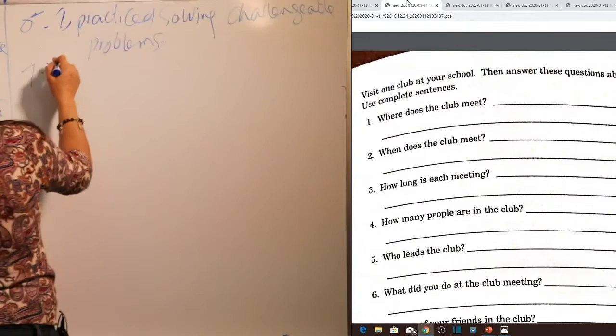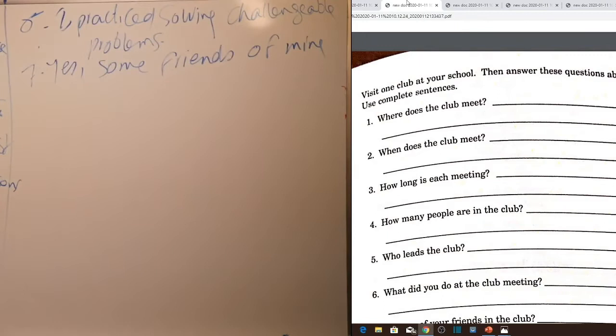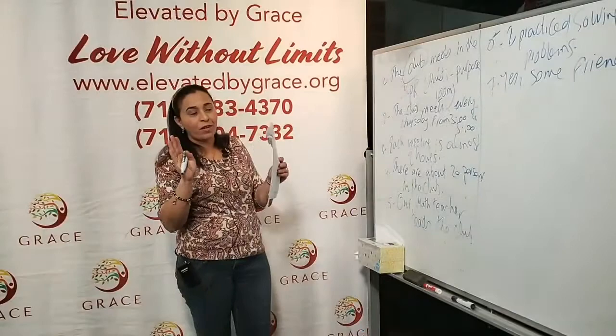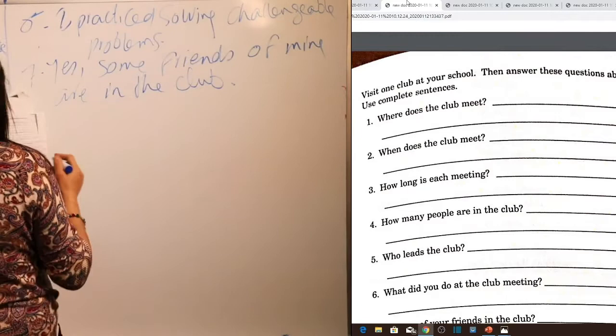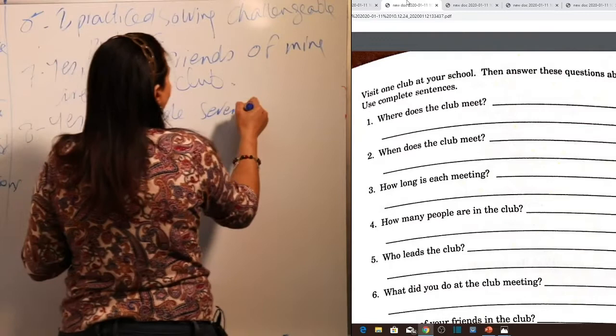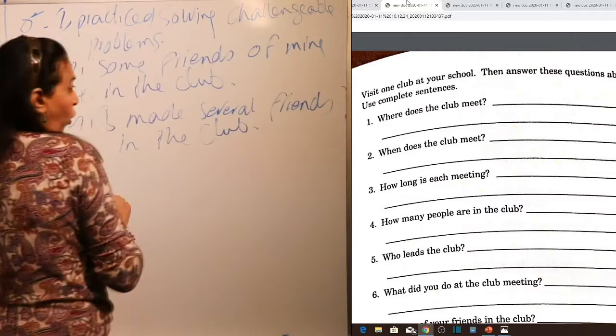Question seven: 'Are any of your friends in the club?' Yes — 'some friends of mine are in the club.' Note: we say 'a friend of mine,' not 'a friend of me.' 'Mine' refers to something belonging to me — 'a friend of mine' means one of my friends. Question eight: 'Did you make any new friends?' Yes — 'I made several friends in this club. I no longer feel lonely.'